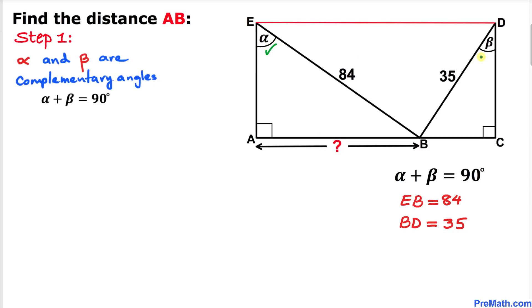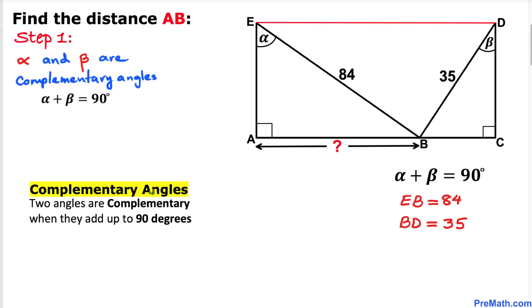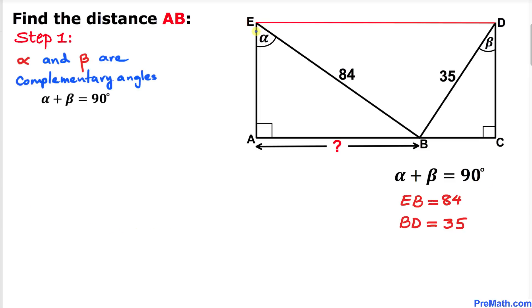In our first step, angles alpha and beta are complementary angles. The definition of complementary angles: two angles are complementary if they add up to 90 degrees. We can see that angle E is 90 degrees, this is our angle alpha, then the adjacent angle has to be angle beta.